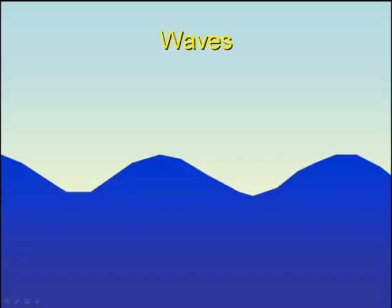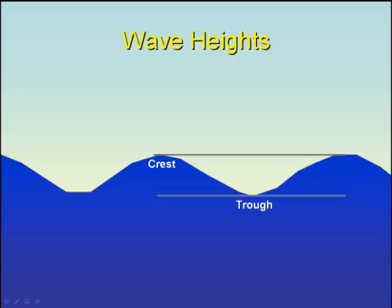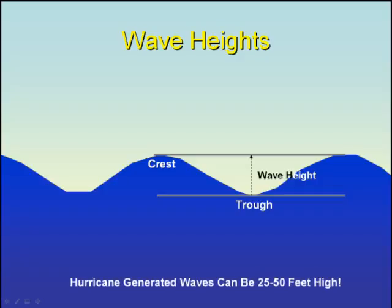The top of a wave is known as the wave crest, and the bottom of the wave is known as the wave trough. The distance between the crest and the trough is known as the wave height. Wave heights in an average hurricane can be 25 to 50 feet high.